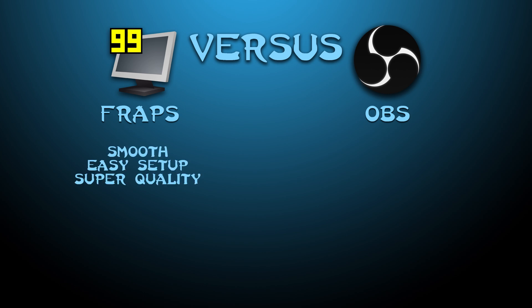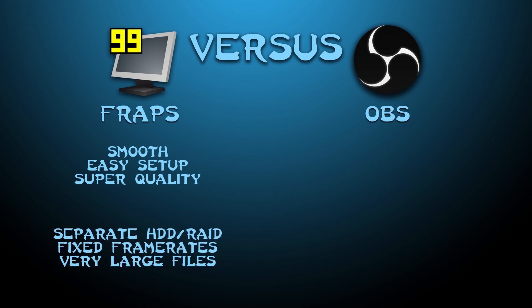Let's start off with the strong points of FRAPS. The video FRAPS creates is super smooth, even at 30fps. Setting up FRAPS can be done within 20 seconds and takes little knowledge of settings. Quality-wise, FRAPS produces almost raw video footage. The weak parts of FRAPS though are: it isn't free, it needs a separate hard drive or a RAID setup to cause no lag when recording, the frame rate you play in is locked in sections of 30 — so either 30, 60, 90, 120 etc. fps — and the files produced by FRAPS are two and a half gigabytes per minute for 1080p footage, so they're basically huge.